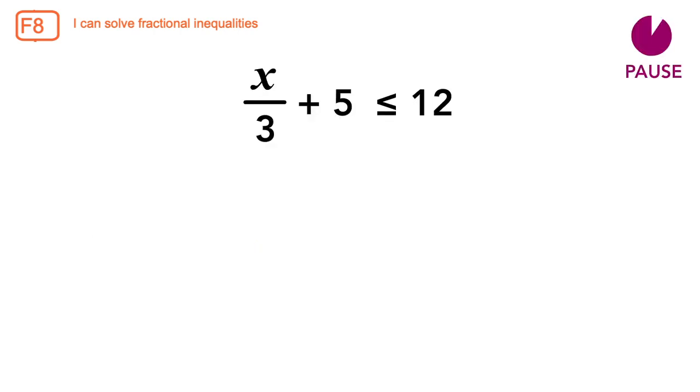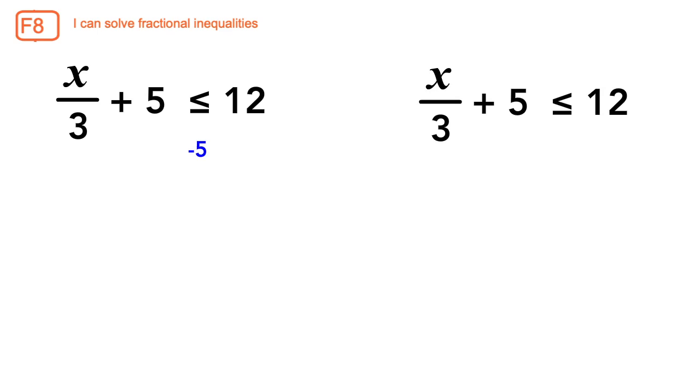Pause and have a think about what the first step would be to solve this question. As you've probably guessed, this question is slightly different from the previous questions. If you said subtract both sides by 5 as the first step, then this would be absolutely correct. If you said multiply both sides by 3, this would also be correct; however, how you would have laid it out may be different from what is expected.